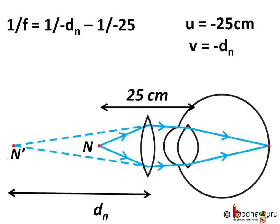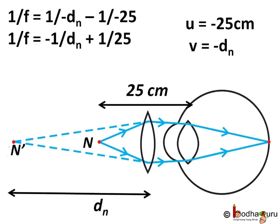Now, putting these values of u and v in the formula 1 by f is equal to 1 by v minus 1 by u. So, we get 1 by f is equal to 1 divided by minus d_n minus 1 divided by minus 25. This can be simplified as 1 by f is equal to minus 1 by d_n plus 1 by 25 as minus minus becomes plus.